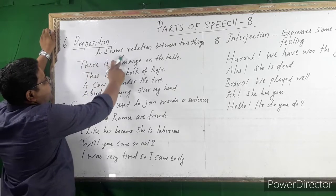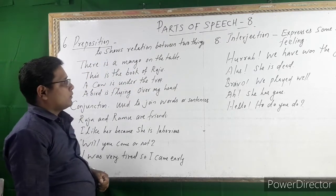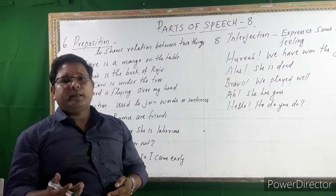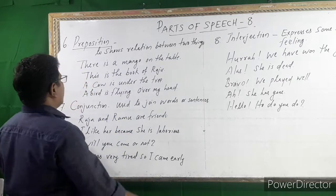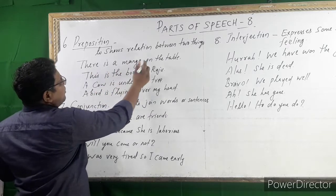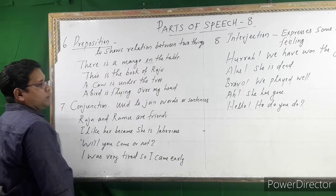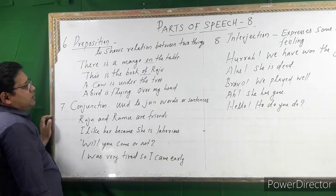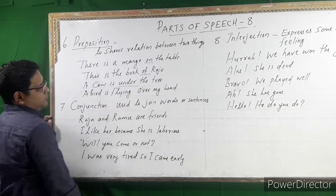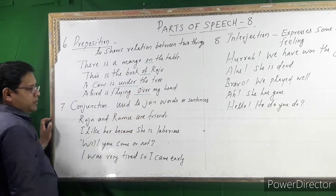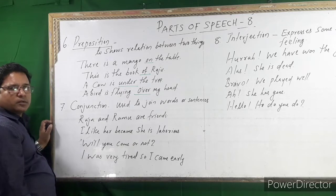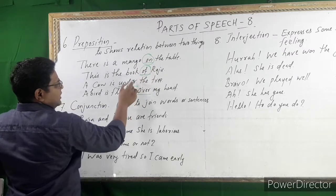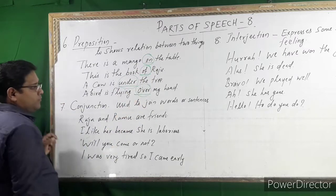Preposition shows the relation between two things. For example: 'There is a mango on the table' — 'on' is a preposition. 'This is the book of Vriyaji.' 'A cow is under the tree.' 'A bird is flying over my head.' These are prepositions: on, of, under, over.